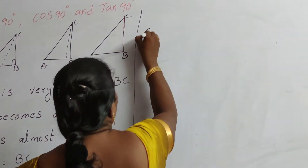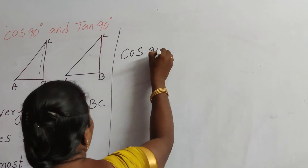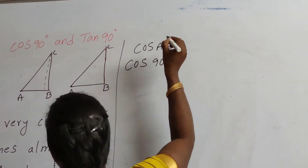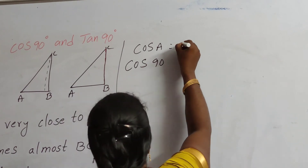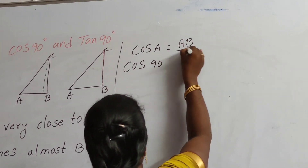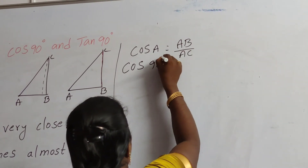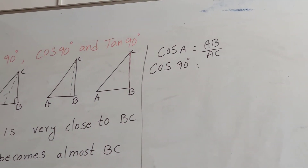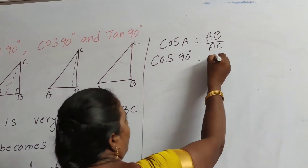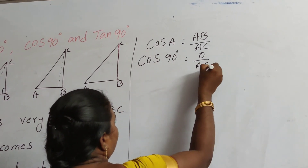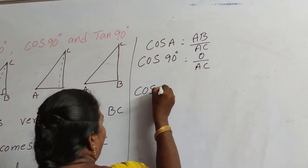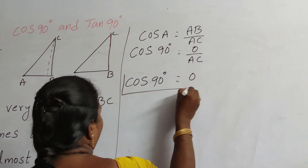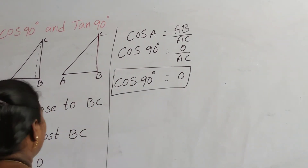Cos 90 degrees: cos A equals adjacent side by hypotenuse, which is AB by AC. Since AB is almost 0, we get 0 by AC. Therefore cos 90 degrees equals 0.